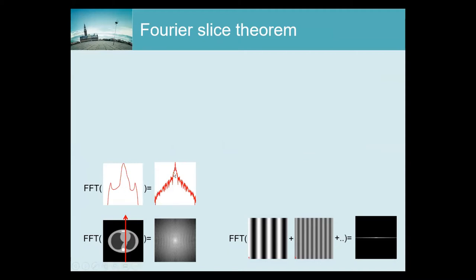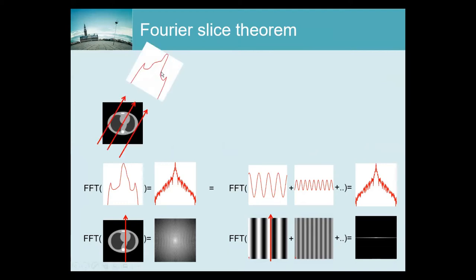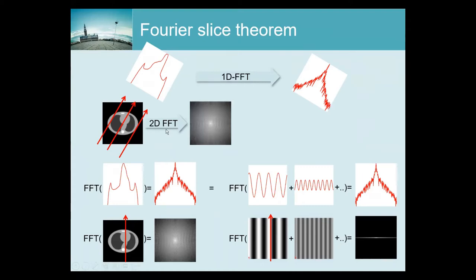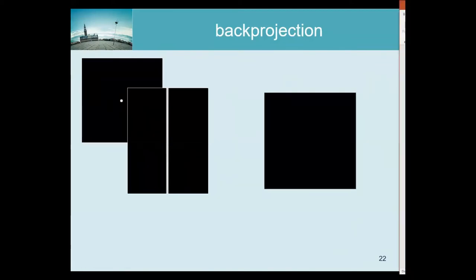Here is the projection. If we take the Fourier transform of this, then this line equals this thing. So if we have an image and we compute a projection, we can take the one-dimensional Fourier transform to get this profile. If we put that profile in an image along the same direction as the projection, we find this line already in a two-dimensional Fourier transform. If we measure these profiles over 180 degrees, we get enough lines to fill the entire 2D Fourier transform, then all we have to do is take the inverse 2D Fourier transform. That would be one way to reconstruct an image, and it actually works.